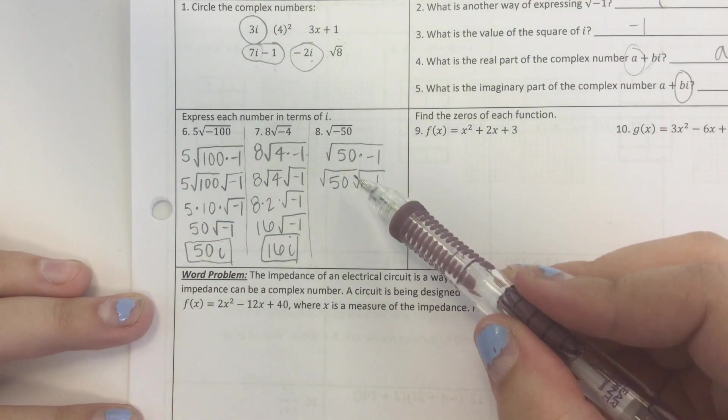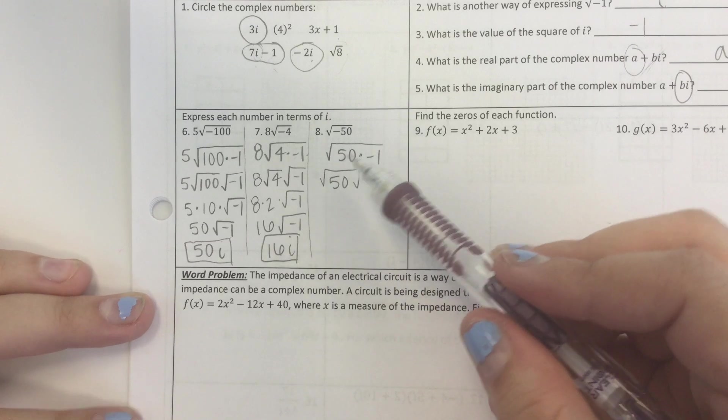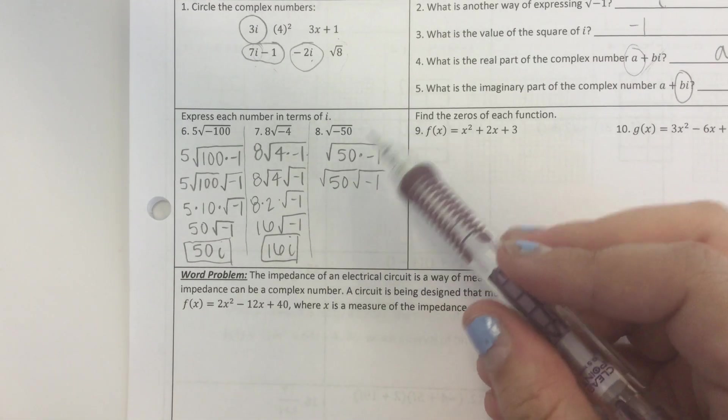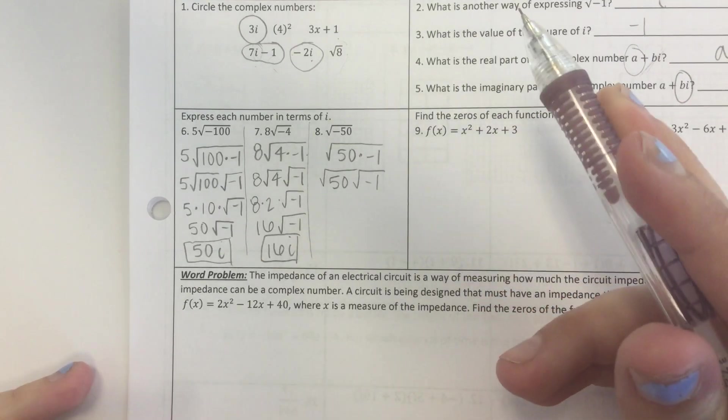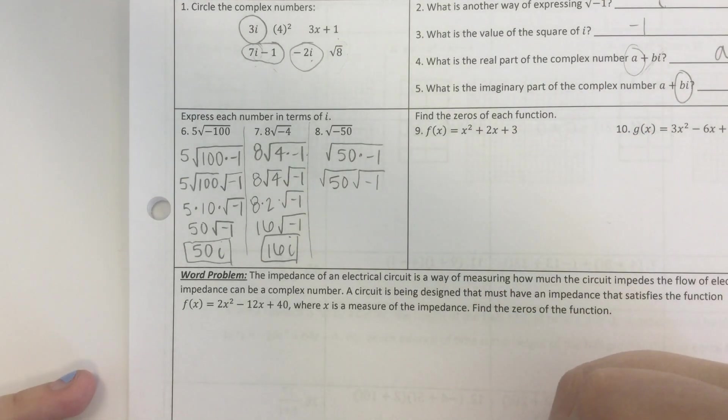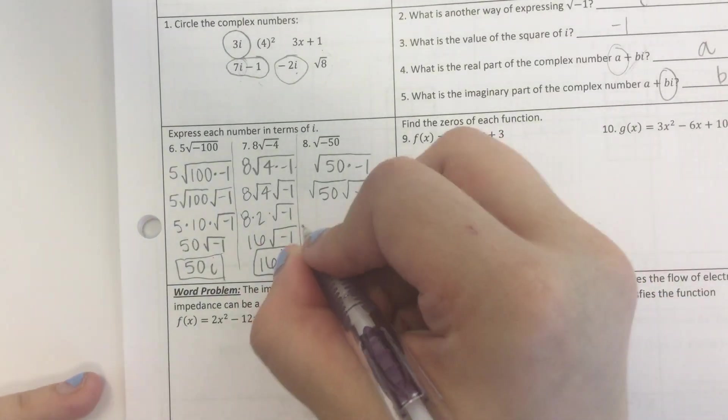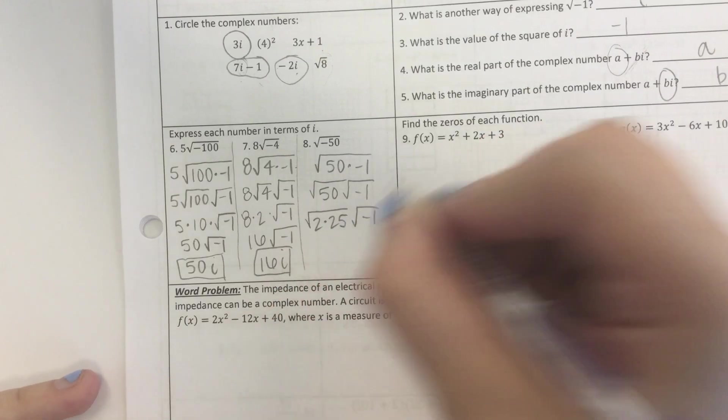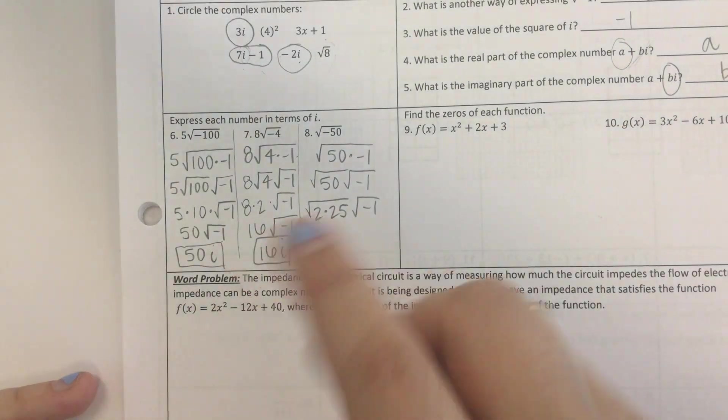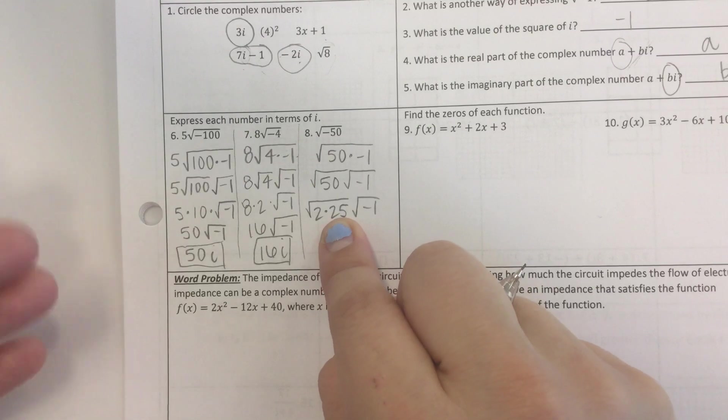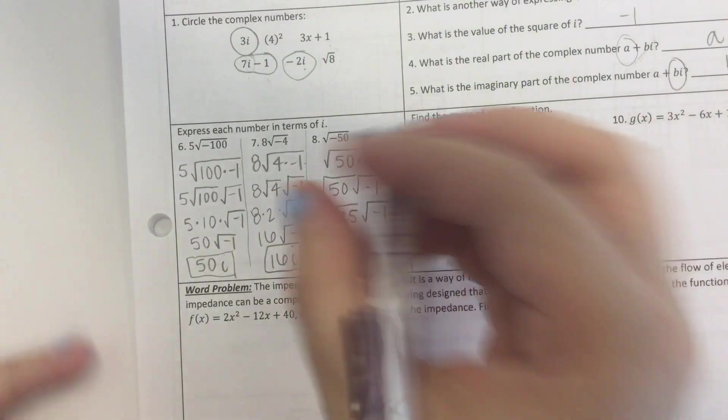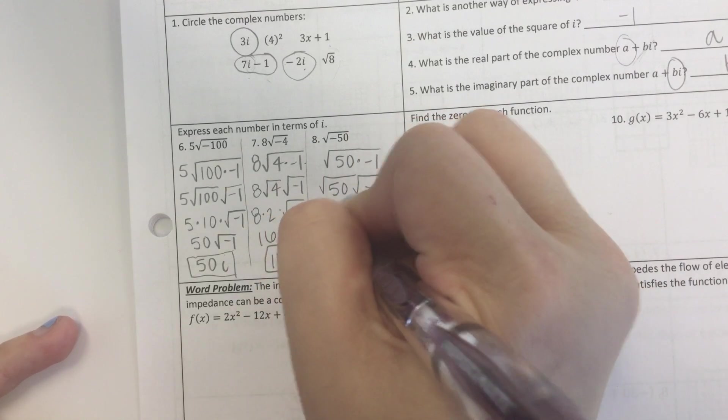But I can take out a perfect square of 50. Can anybody think of any perfect square that goes into 50? I'll give you a second to think about it. Did you get 2 times 25? The square root of 25 is a perfect square and I can take the square root of 25. So I'm going to rewrite this as the product of three radicals.